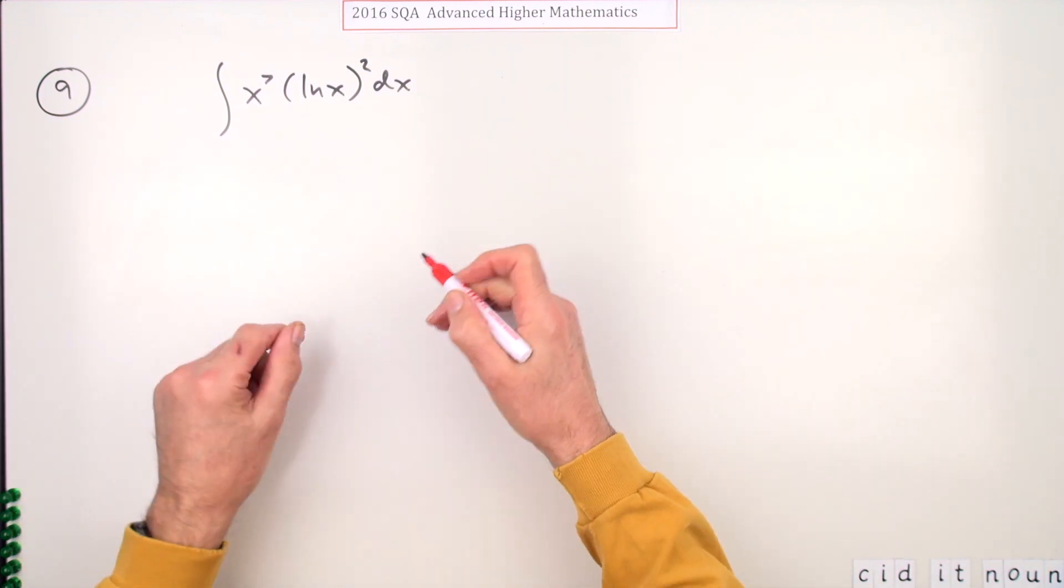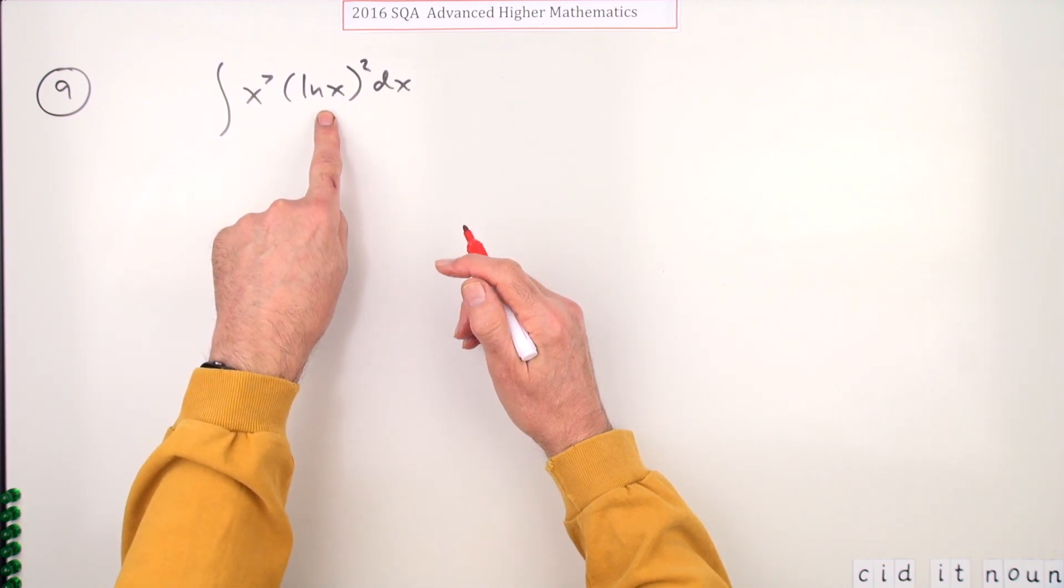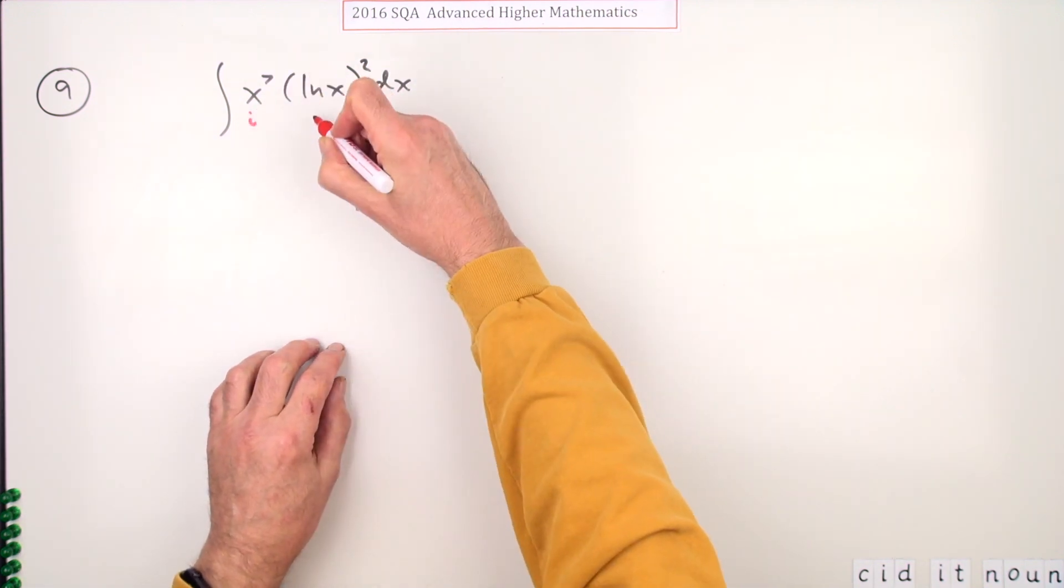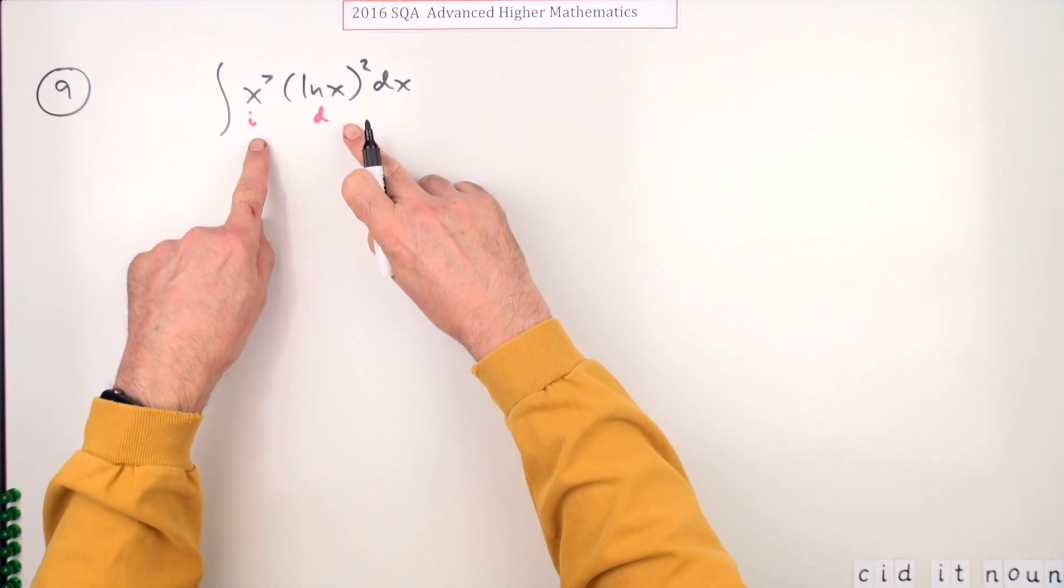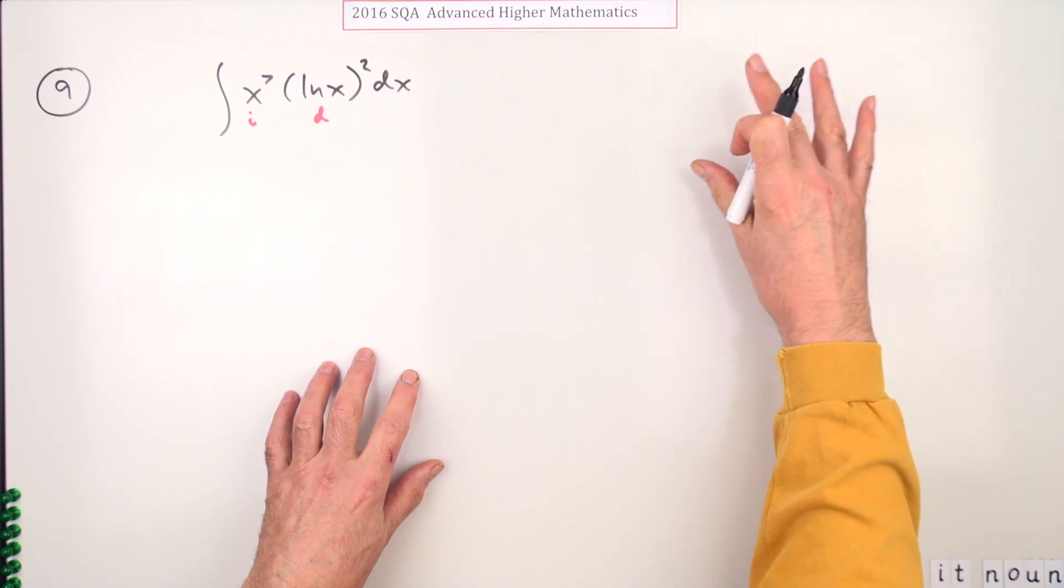Well, the first bit is which one are you going to choose to integrate, which one to differentiate? Well, you don't know how to integrate that one, so it'll have to be integrate this one, differentiate that one. Now I'm just indicating my choice this way. If you like, you can write your U's and V's and V' at the side.